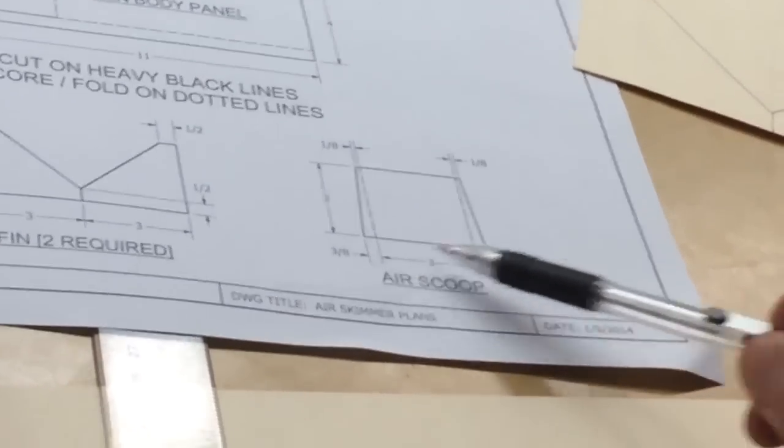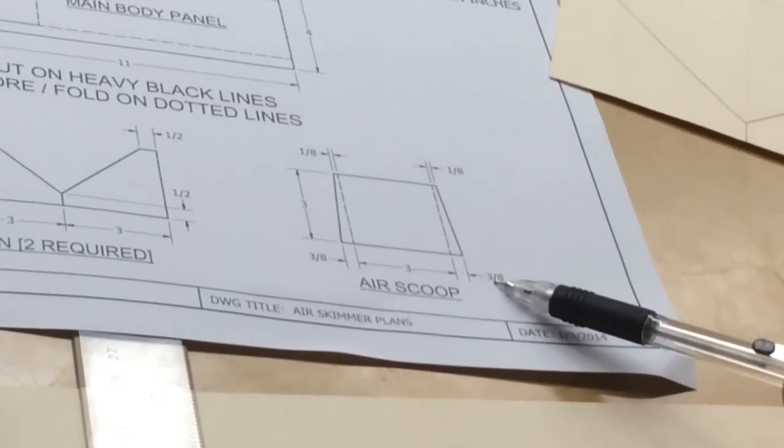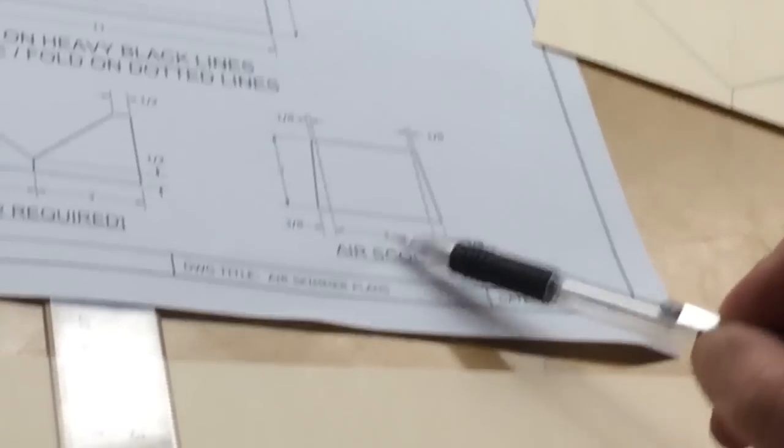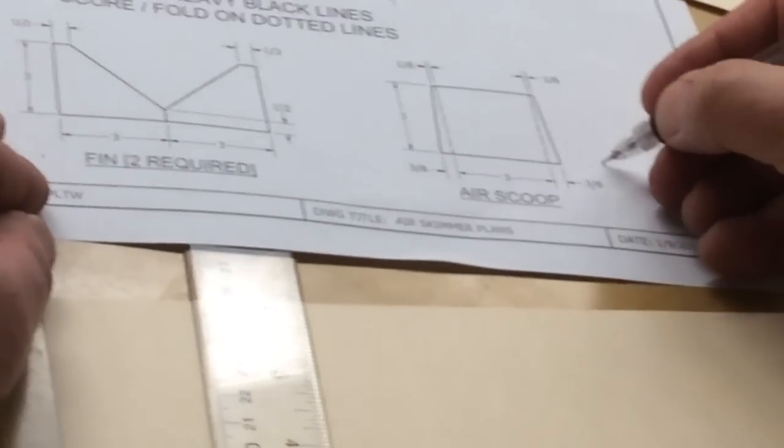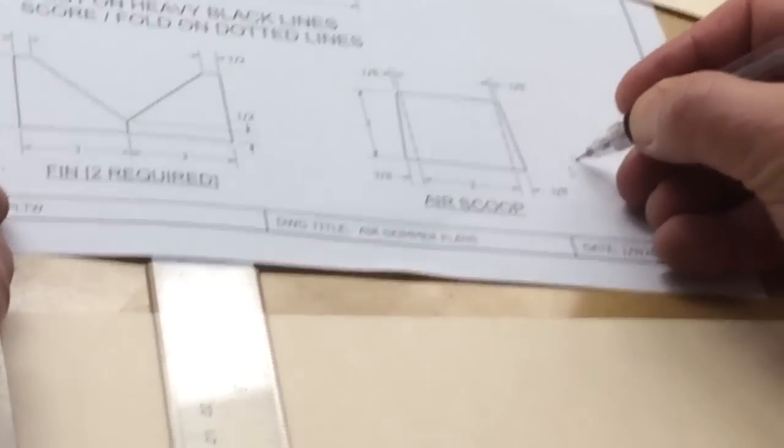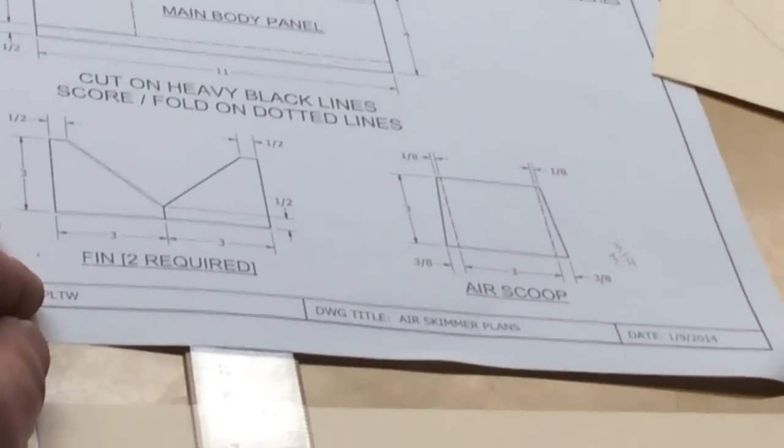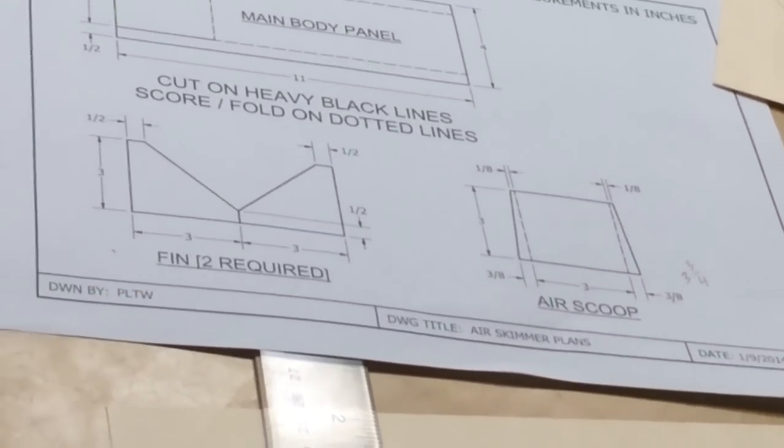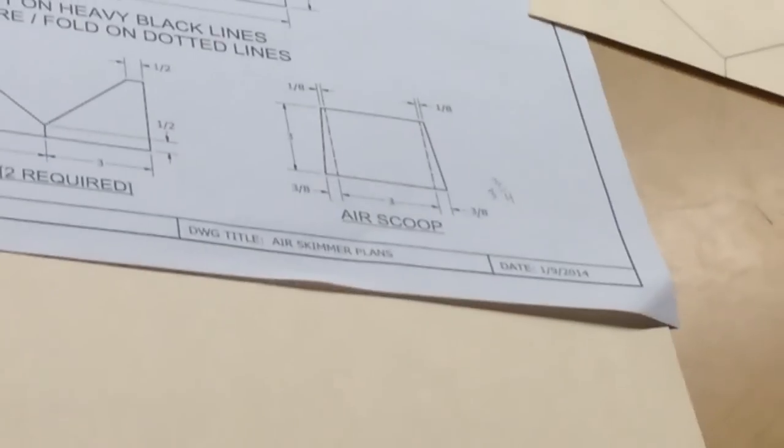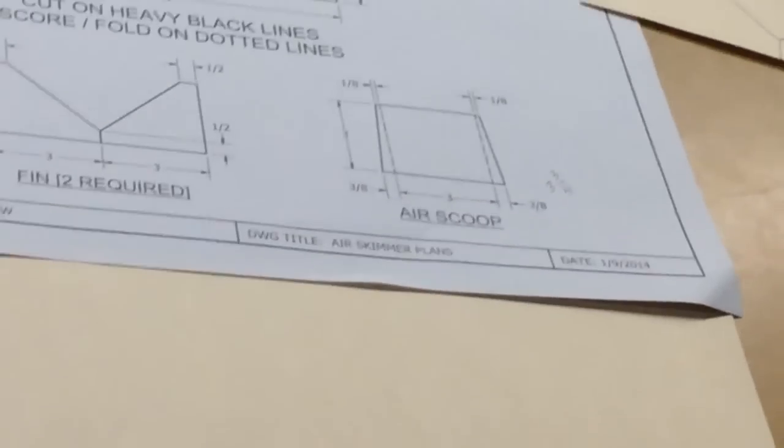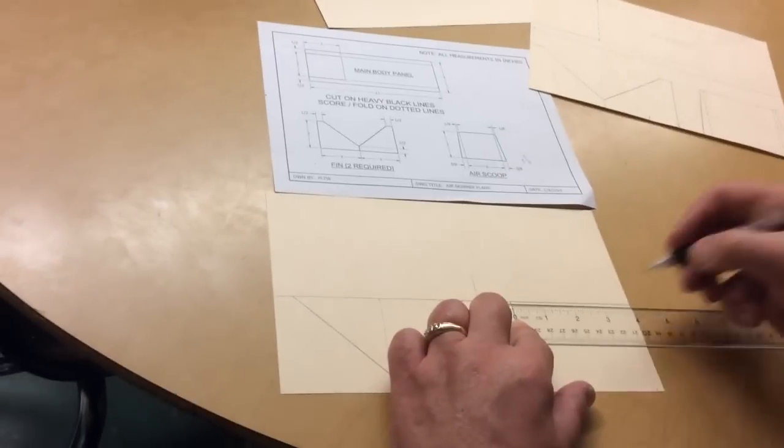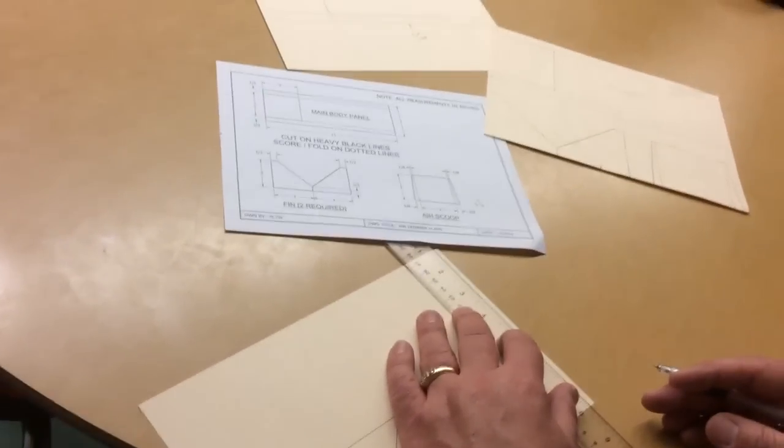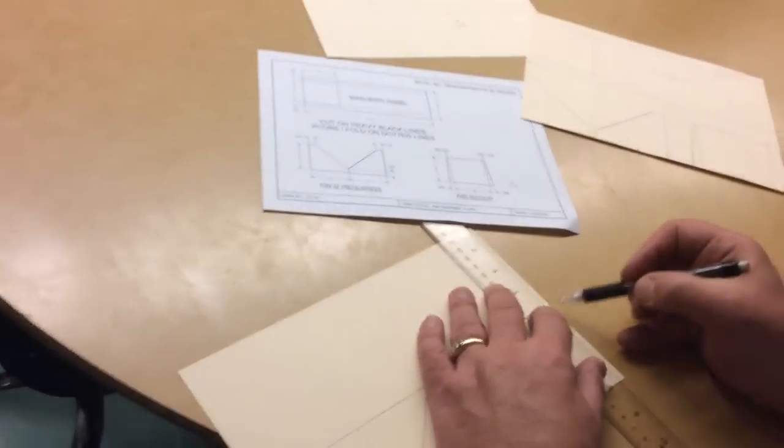Plus the three-eighths plus the three-eighths here. So if we add three and then three-eighths plus another three-eighths, we will get a total of three and three-fourths. Okay, three and three-fourths. So I'm going to make a mark over here three and three-fourths over and I'll do the same thing at the top. And then I'm going to draw a straight vertical line between those two points.